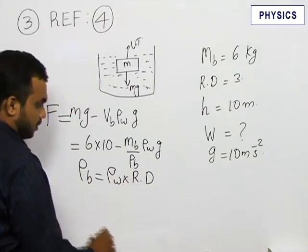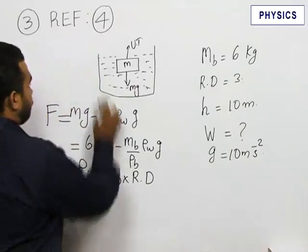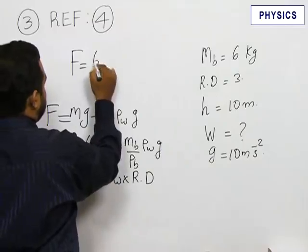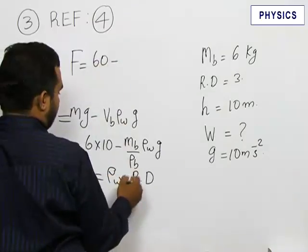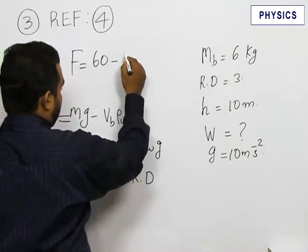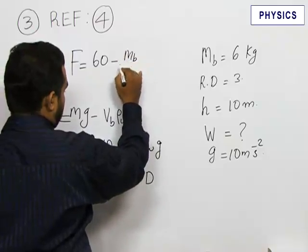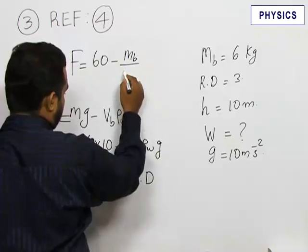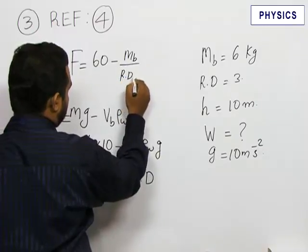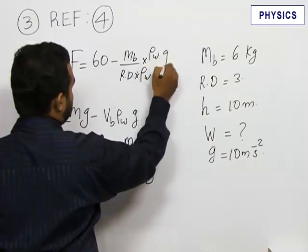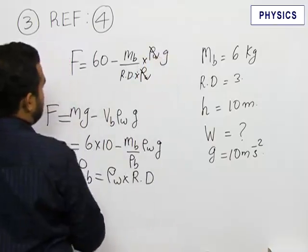This becomes F is equal to 60 minus mass of the brick mb by relative density into density of water into g. So these two cut out and substituting these values...